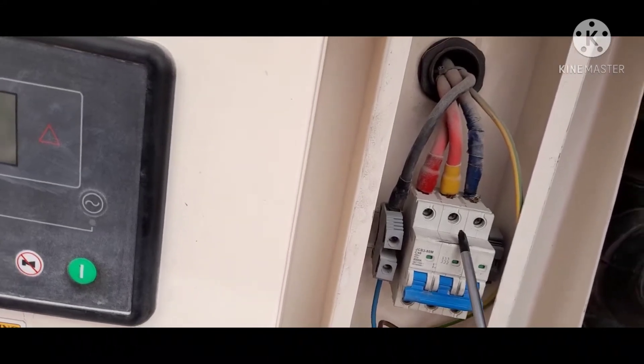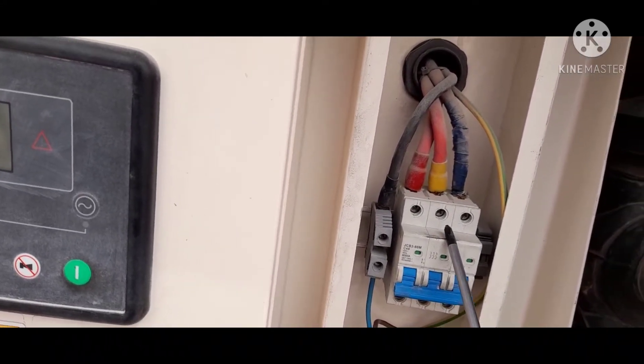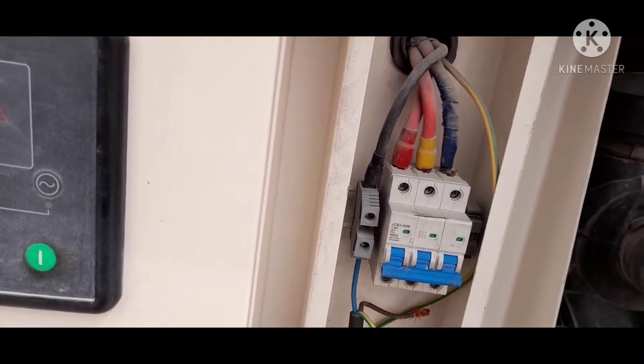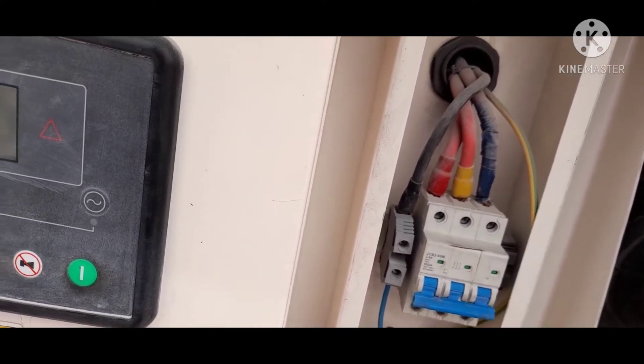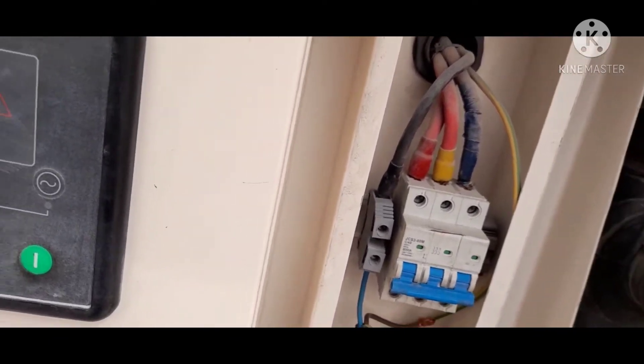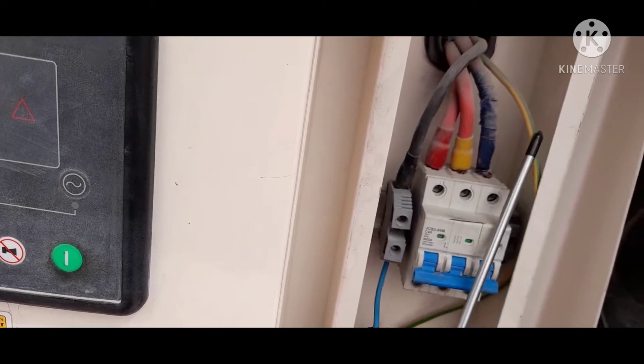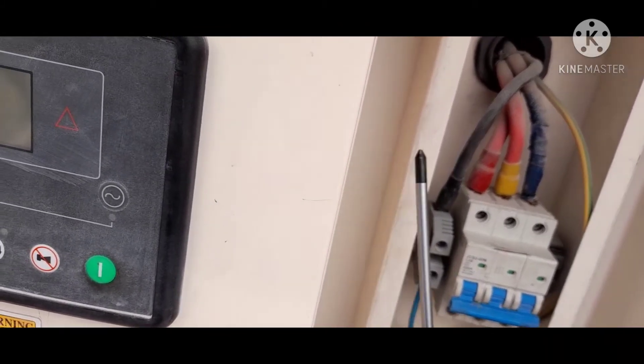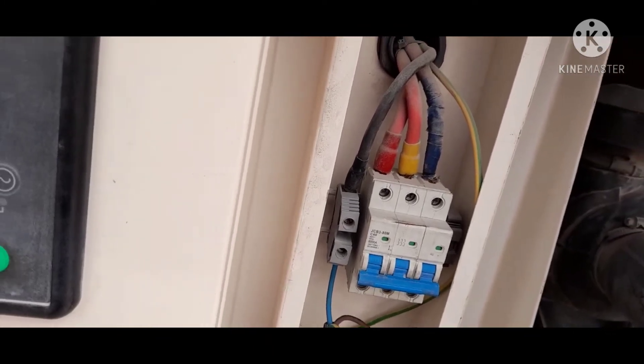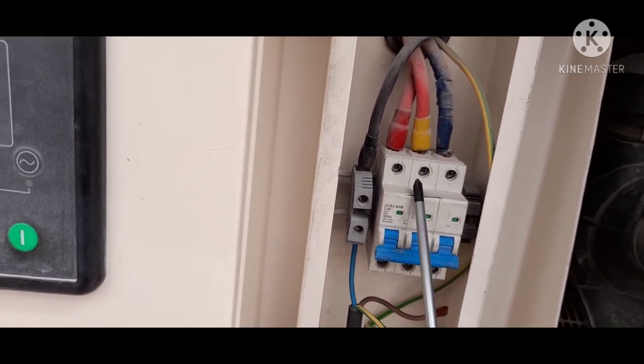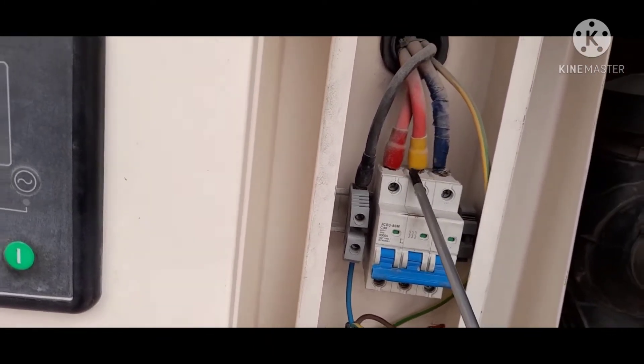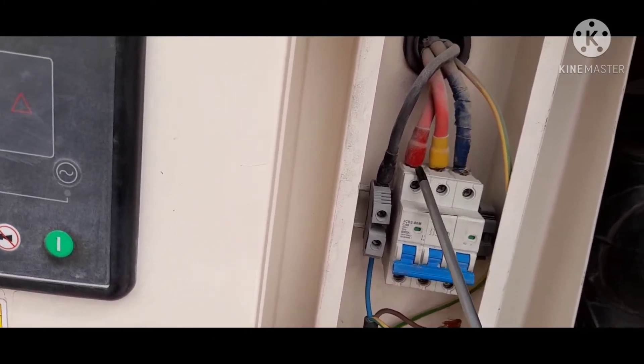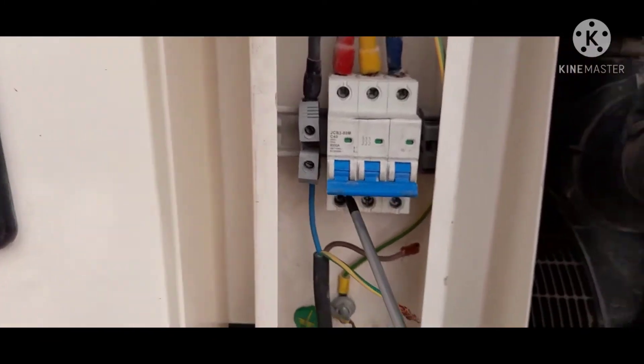Nandito yung breaker. Ayan. So, ang gagawin natin guys, ito 3 phase. Kukuha tayo ng single phase na supply. So, 3 wire yung kuha natin. Alam mo, bakit 3 wire? Kasi mayroon tayong off plan isa. Line 1 at saka line 2. So, ang gagawin, itong breaker na ito. Ito yung load side. Este, line side.